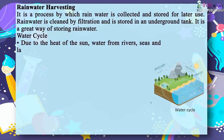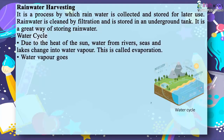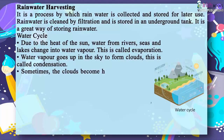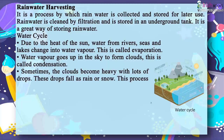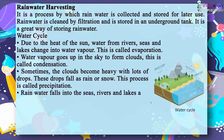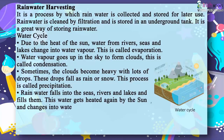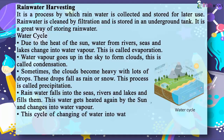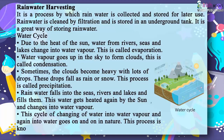Water cycle. Due to the heat of the sun, water from rivers, seas and lakes changes into water vapour — this is called evaporation. Water vapour goes up in the sky to form clouds — this is called condensation. Sometimes the clouds become heavy with lots of drops, and these drops fall as rain or snow — this process is called precipitation. Rainwater falls into the seas, rivers and lakes and fills them, and this water gets heated again by the sun and changes into water vapour. This cycle of changing water into water vapour and again into water goes on and on.